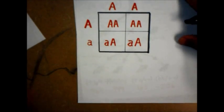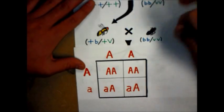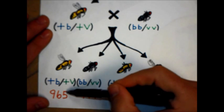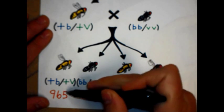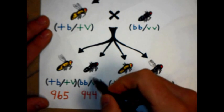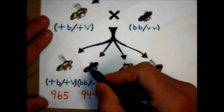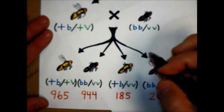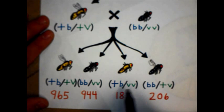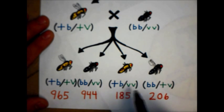So, he runs his test. This fly back with its double mutant. 965 double normal in appearance, that is heterozygous. 944 double mutants, but then 185 and 206 where the chromosomes have somehow flip-flopped.